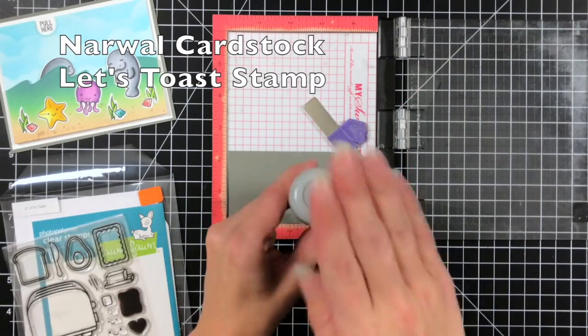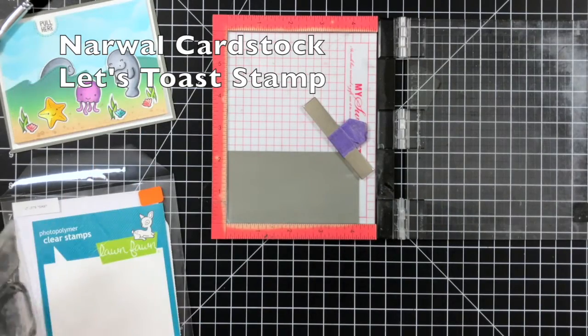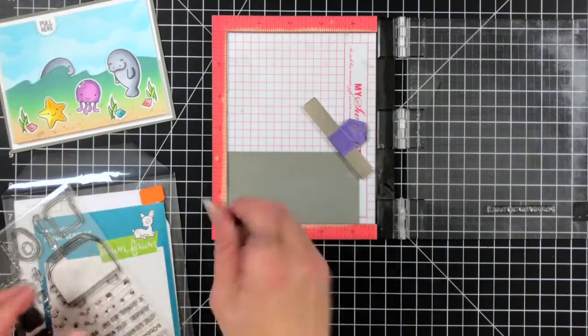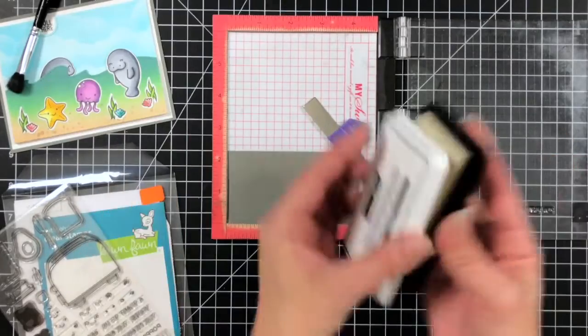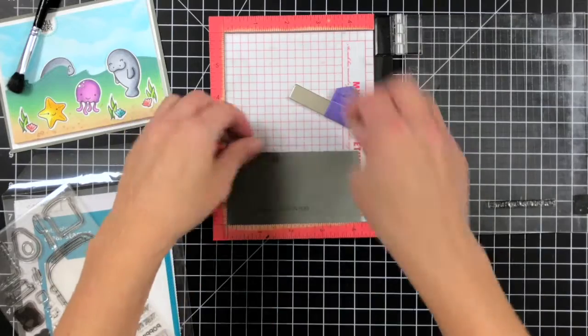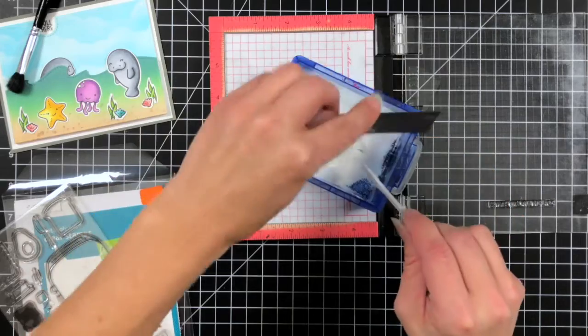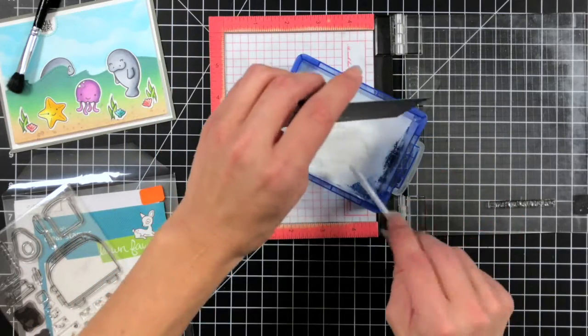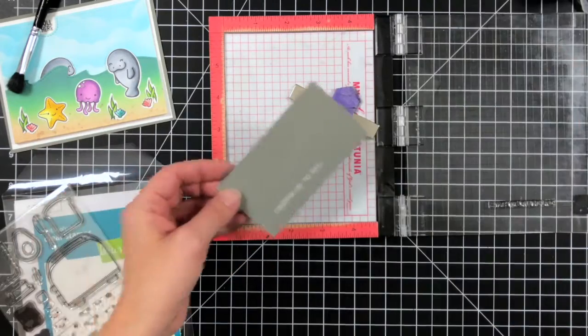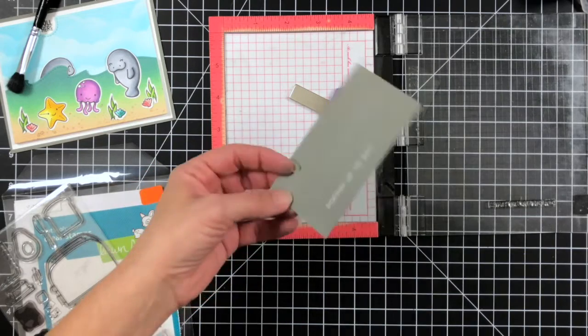The last step to my card is just creating a sentiment. So I'm also using some of the narwhal cardstock and I'm going to use the Let's Toast stamp set. I'm just going to ink this up with some clear ink from Lawn Fawn and then I'll heat emboss with some white embossing powder. And I thought this narwhal cardstock just tied in really well to the colors of my manatees. The white embossing powder really pops off of the narwhal cardstock.